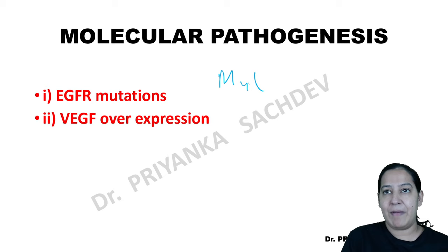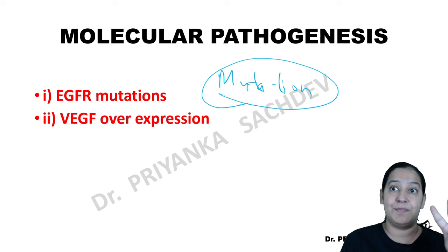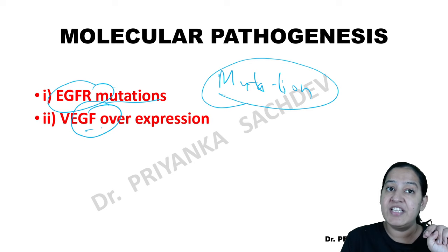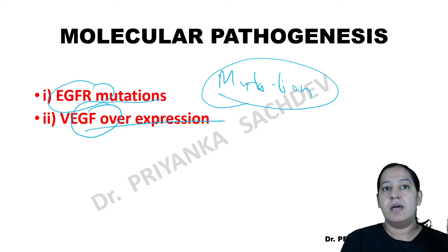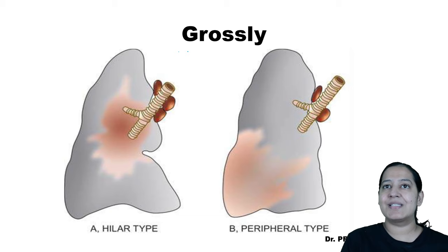Now, which mutations lead to lung cancer? There are two main mutations: EGFR mutation and VEGF overgrowth. These two mutations lead to lung cancer.